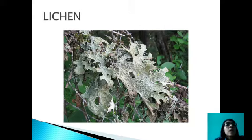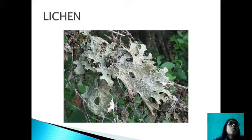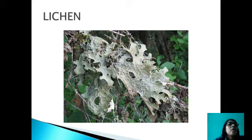Now come to the last group: Lichen. Lichen is not a distinct group. Algae and fungi mutually come together and form a special structure known as lichen. Both members — algae and fungi — provide benefit to each other, and such a relationship is known as symbiotic association, when both partners are benefited. Hence lichen is not a separate plant group; it is a combination of two groups which are quite different from each other. The word lichen was first used by Theophrastus. In lichens, fungi provide protection, nutrition, and water to the algae, and algae synthesize food for the fungi.